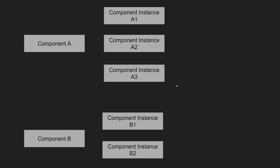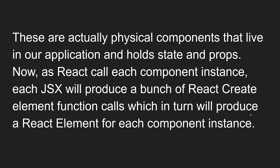For example, component A is defined, and whenever you use it three times, component instances A1, A2, and A3 are created. Similarly, if component B is used two times, two instances — B1 and B2 — are created. These component instances are actual physical components that live in your application and hold the state and props data.